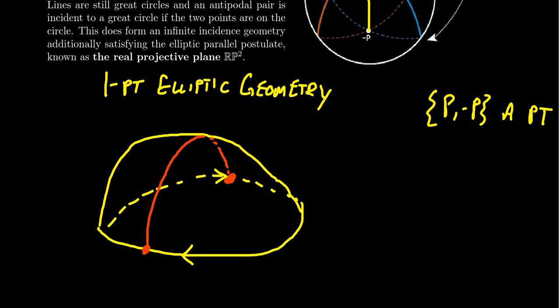The real projective plane gives us this hemisphere model, which now satisfies the incidence axioms. In terms of three points, yes, we have three points — there are countably many points. Lines will of course have more than two points. There is no single line that contains all of the points, because an arbitrary line would look something like this and you're missing so many points.